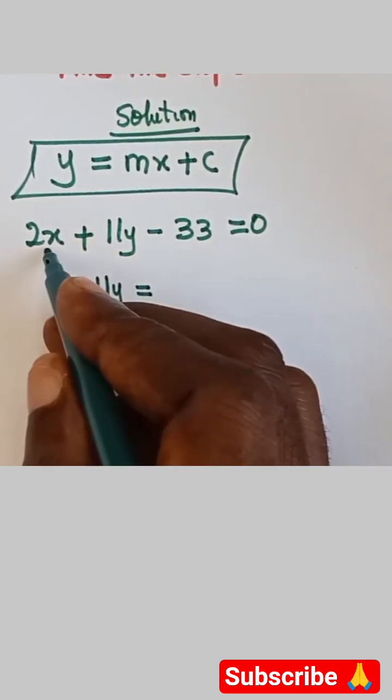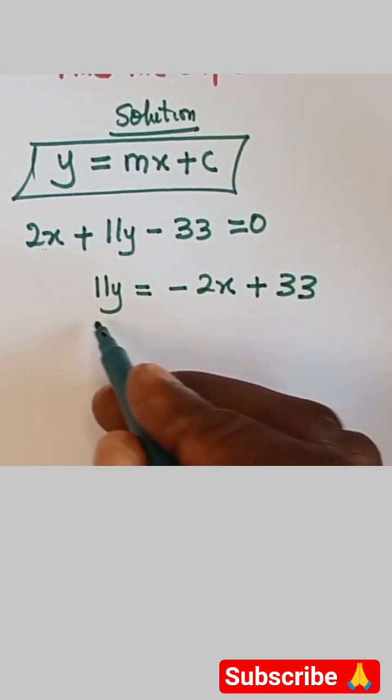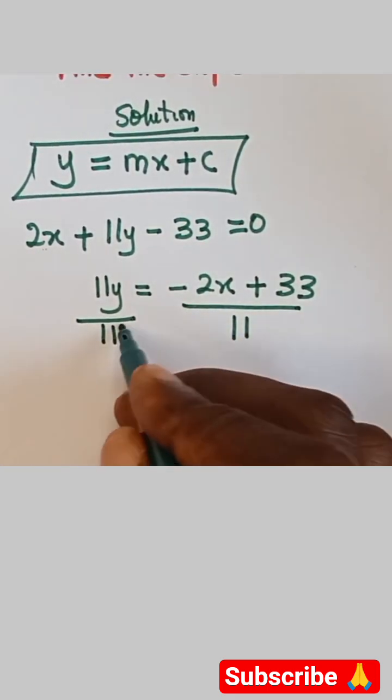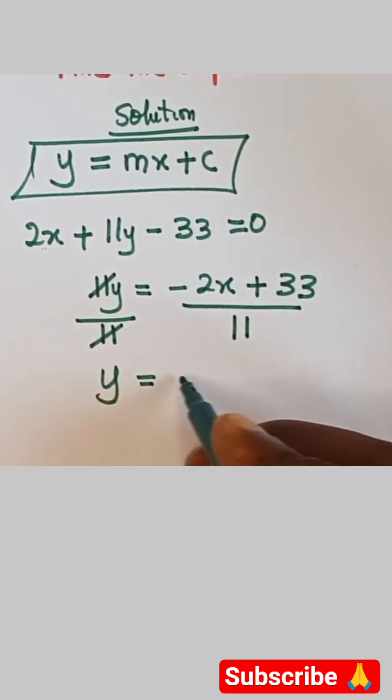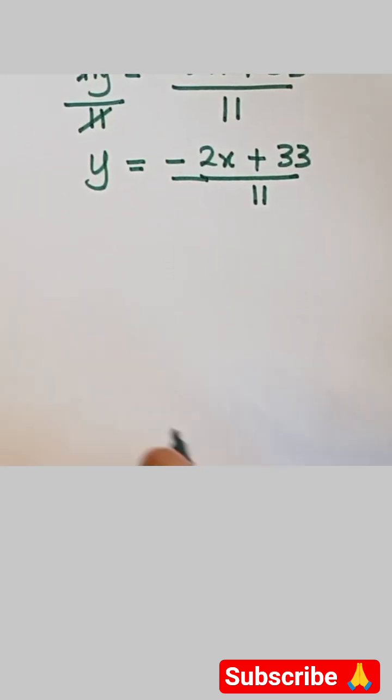So we have 11y equals 2. By the time we bring this here it becomes minus 2x. Let's take this to the other side, it becomes plus 33. Then what do we do? Divide both sides by 11, each of them by that 11.